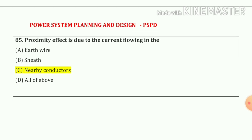Question number 85: proximity effect is due to the current flowing in the nearby conductor — answer is option number C.